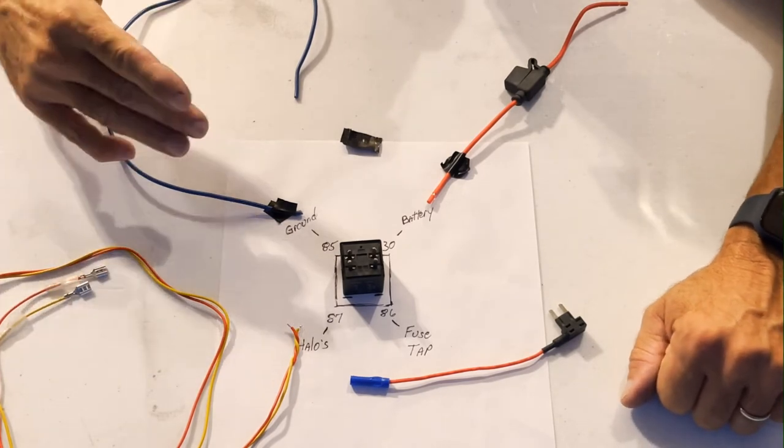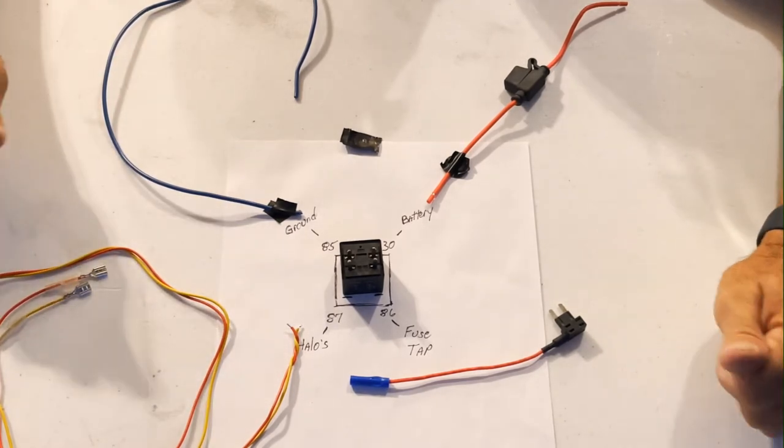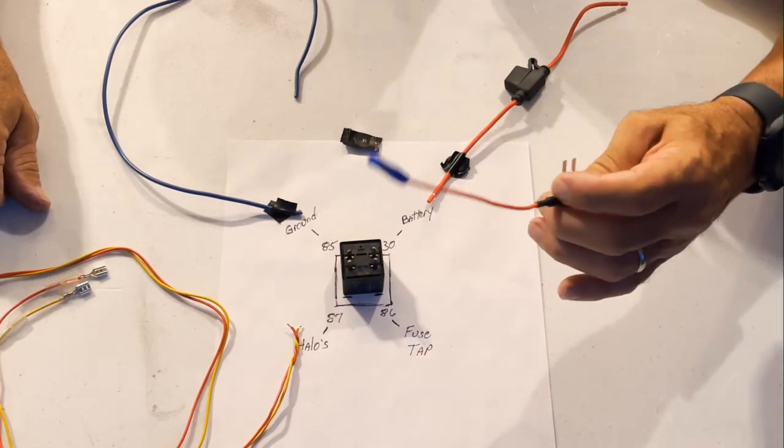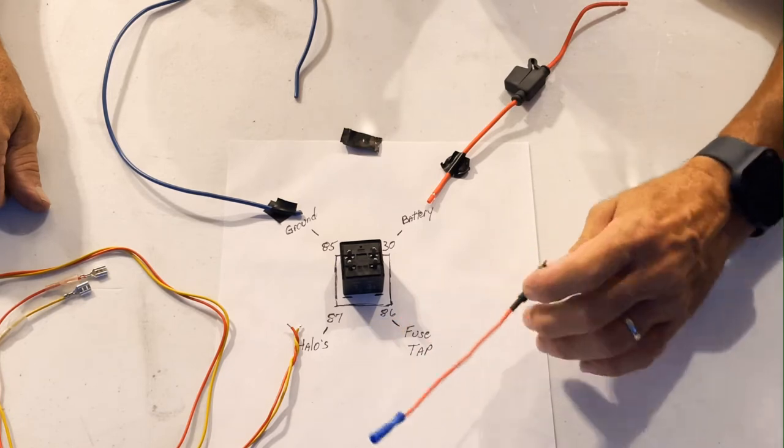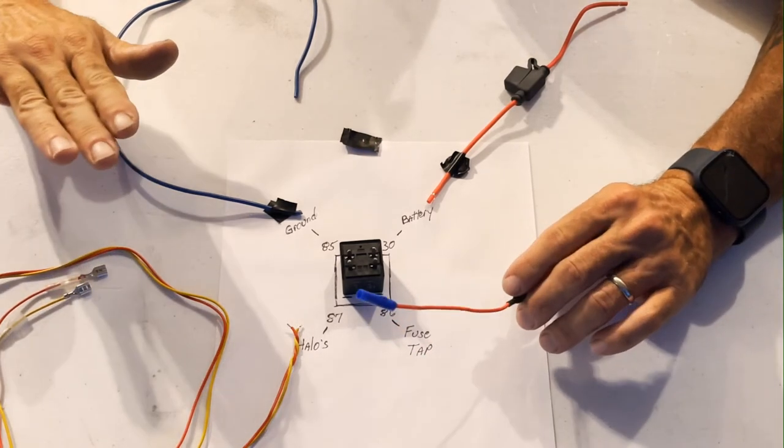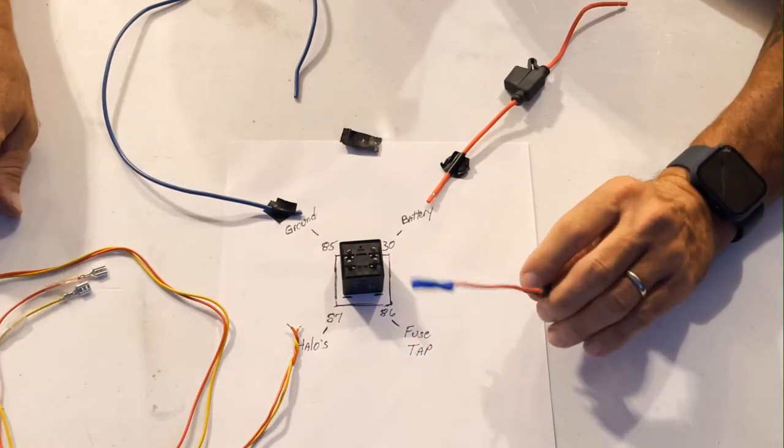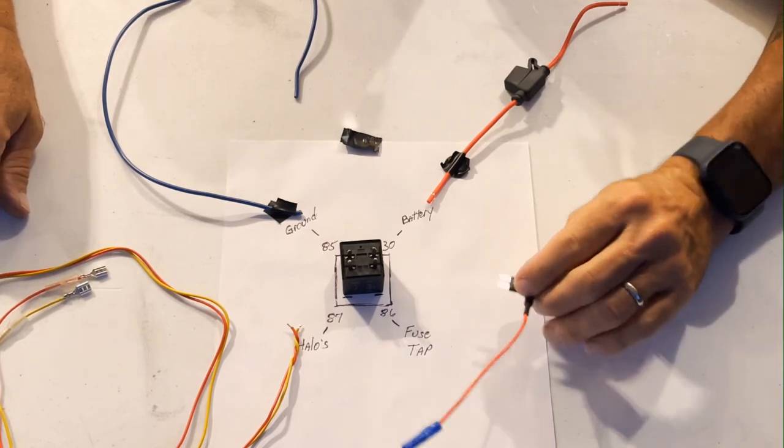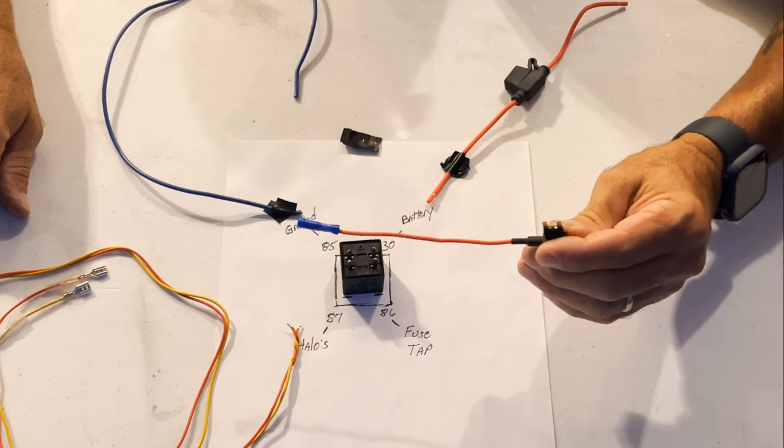And if you're running fog lights or something like that, and you want a switch, then you can run this if you want to a switch or anything that's always live, always got power. So you can run your fog lights or something, even if your key is off, you can tap into something like that, that always has power.